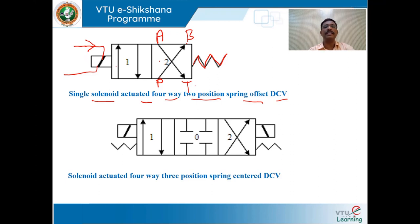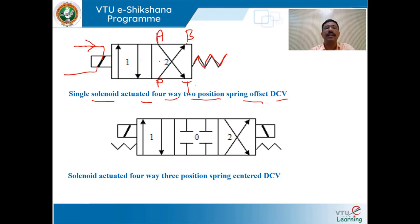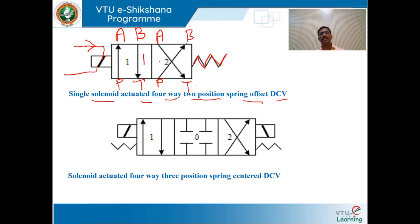When current is supplied to the coil and the coil is energized, the spool moves to the left envelope configuration, causing port opening and closing — P is open to A and B is open to T. This is how to draw a symbol for a single solenoid actuated four-way two-position spring-offset directional control valve.